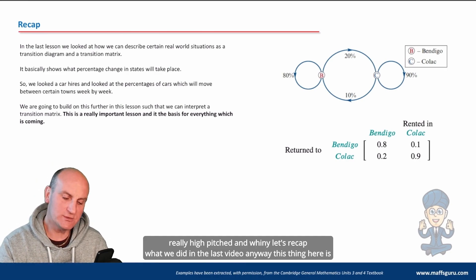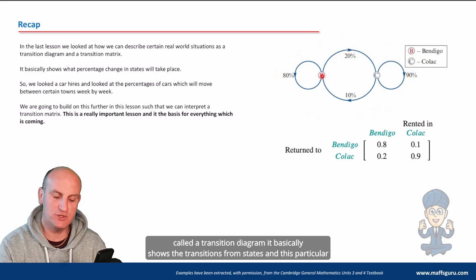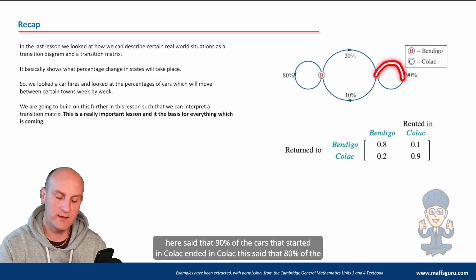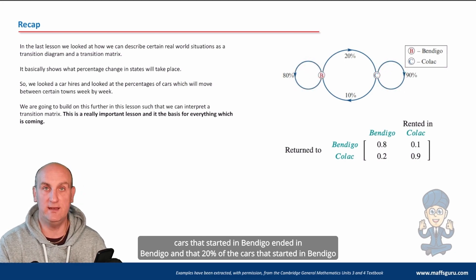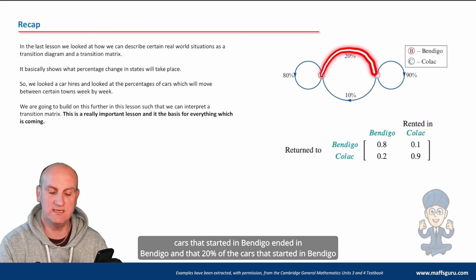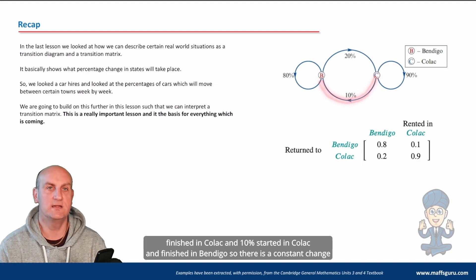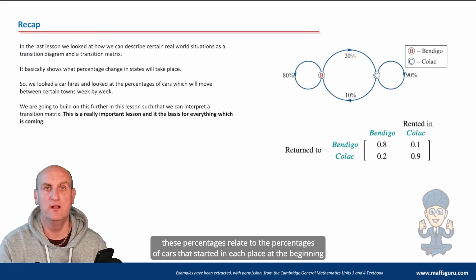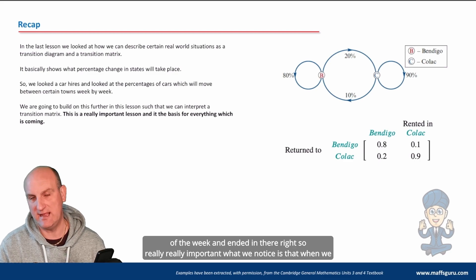This here is called a transition diagram — it basically shows the transitions from states. This particular example is about a car-hire company in Bendigo and Colac. This loop said that 90% of cars that started in Colac ended in Colac. This said 80% of cars that started in Bendigo ended in Bendigo, 20% that started in Bendigo finished in Colac, and 10% started in Colac and finished in Bendigo — so there is a constant change going on.